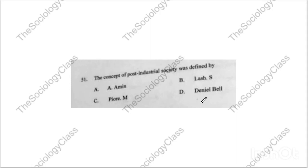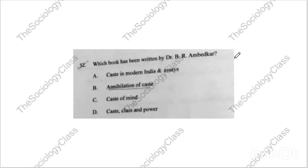Question number fifty-one: 'Post-industrial society was defined by...' The correct answer is D — Daniel Bell. His book is 'The Coming of Post-Industrial Society.' Question fifty-two: 'Which book was written by Dr. B.R. Ambedkar?' The correct answer is B — Annihilation of Caste. Question fifty-three: 'Homo Hierarchicus is whose book?' The correct answer is A — Louis Dumont.